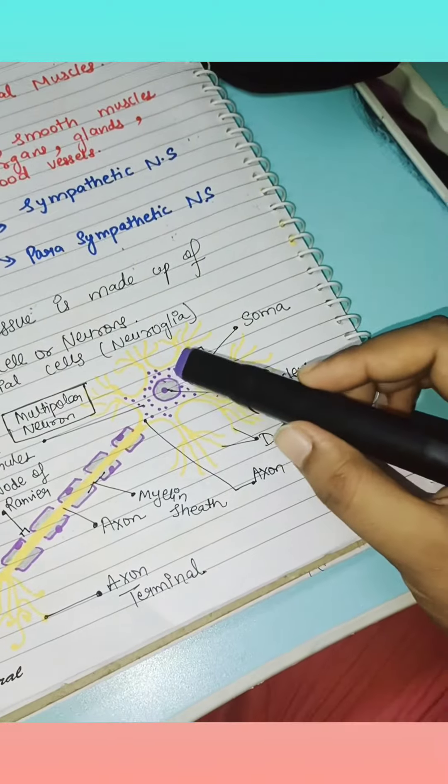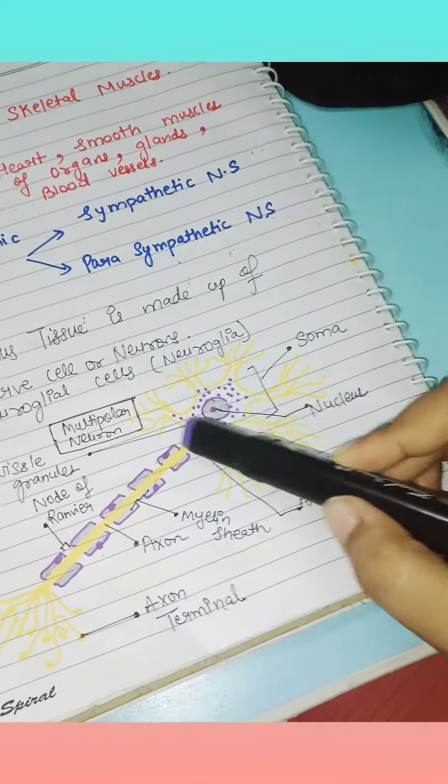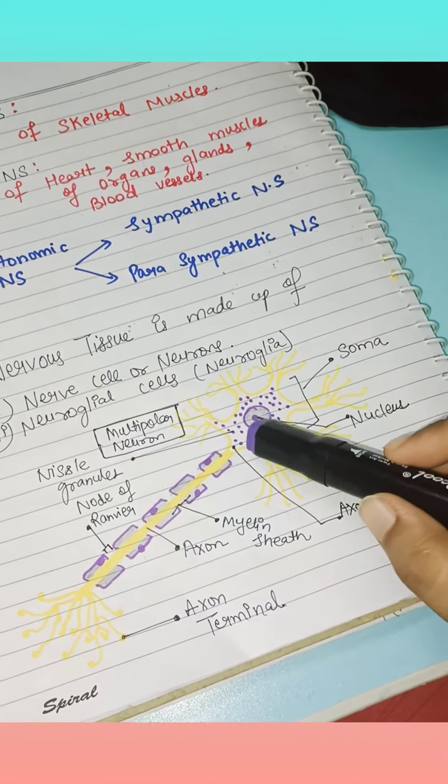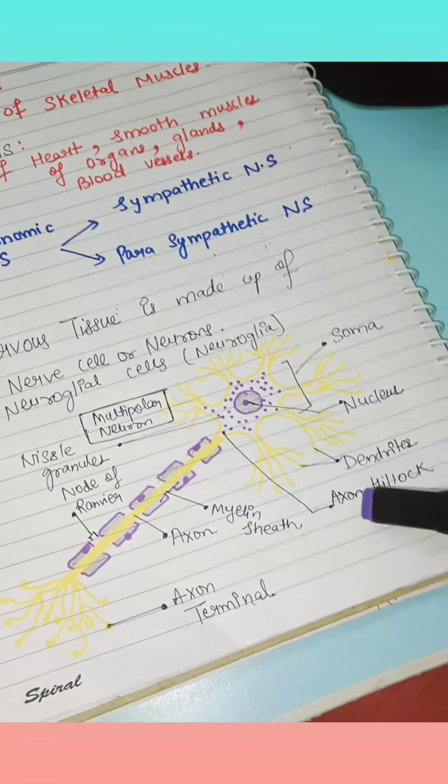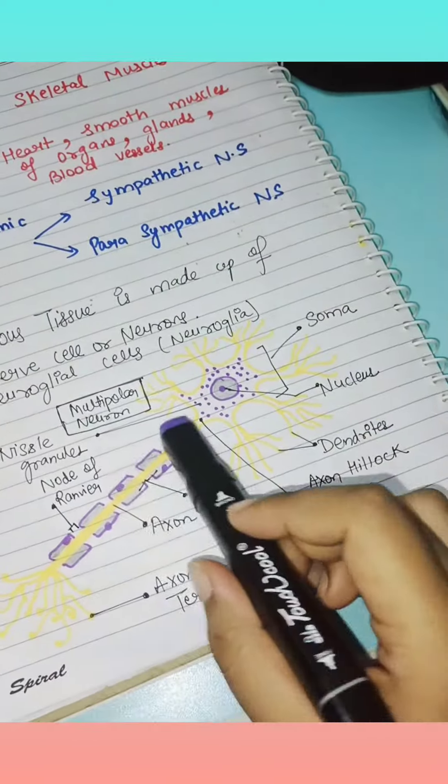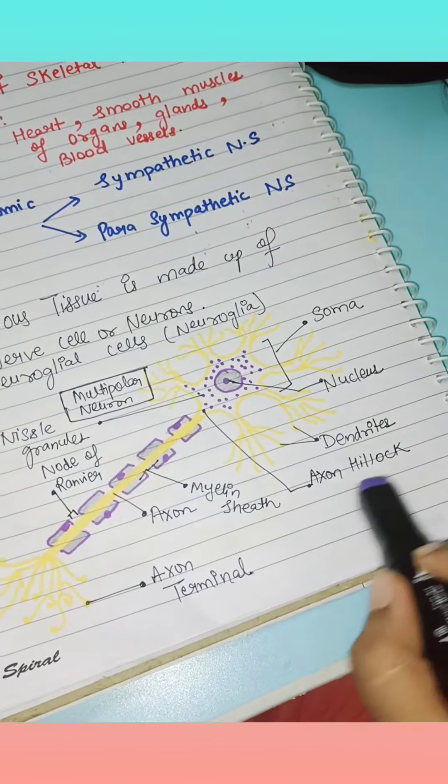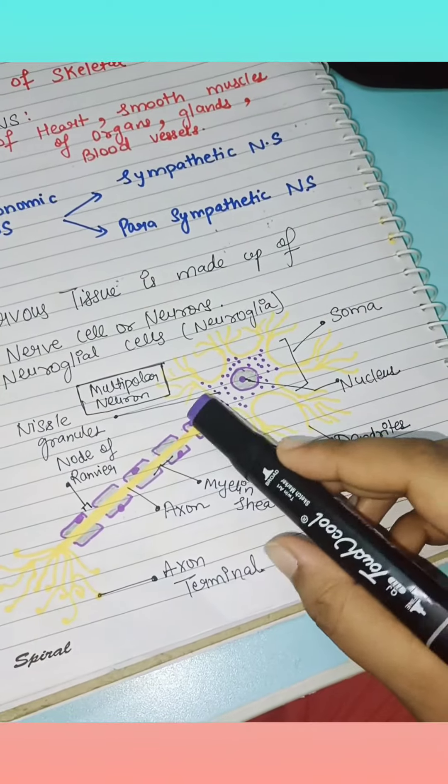Now, the center in the soma is called the nucleus. The soma is the body of the neuron. In the middle of the soma, this is the nucleus. These are the dendrites. Axon hillock is the part where the axon connects to the soma.